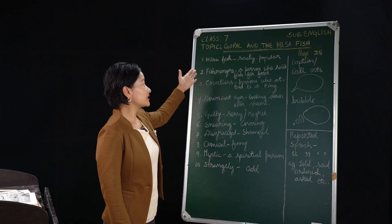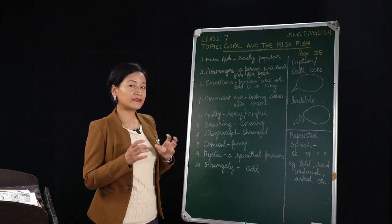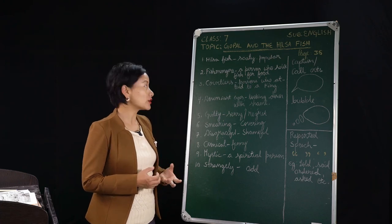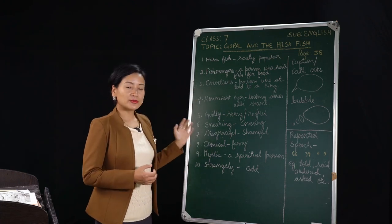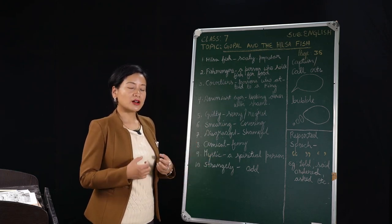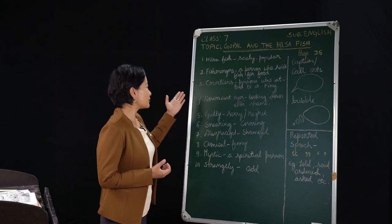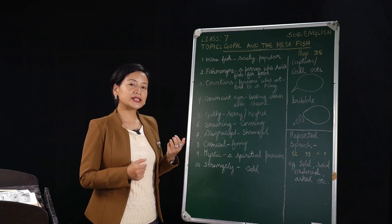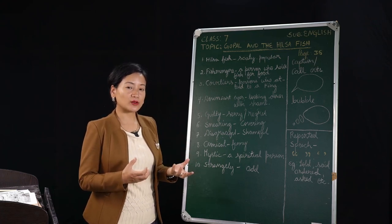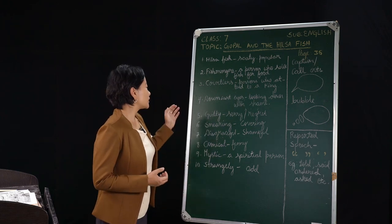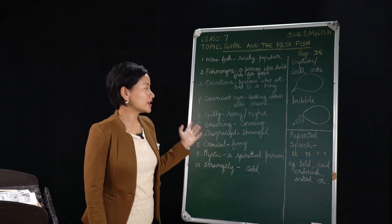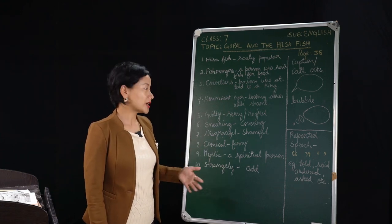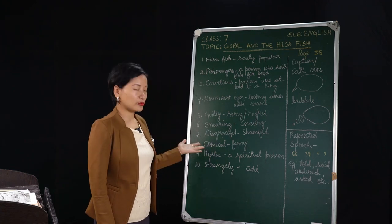So the first one we have here is hilsa fish. A hilsa fish is a very scaly fish that has got scales, and it is very costly but very popular in India. Then fishmongers. A fishmonger is a person who sells fish or shops that sell fish for food. Now the next point we have here is courtiers. A courtier is a person who attends to a king, and in some cases they are also the advisor to the king.